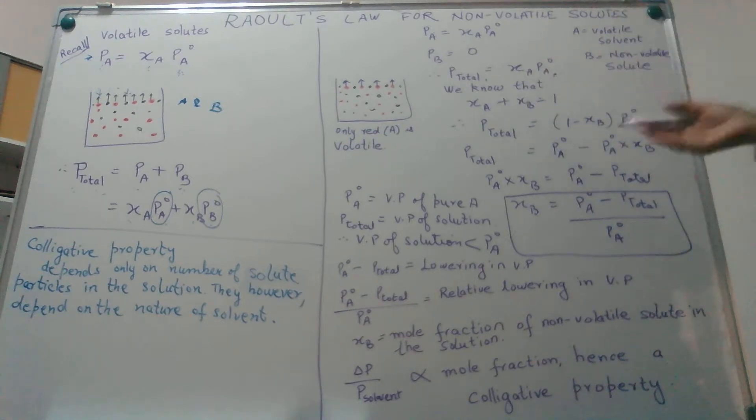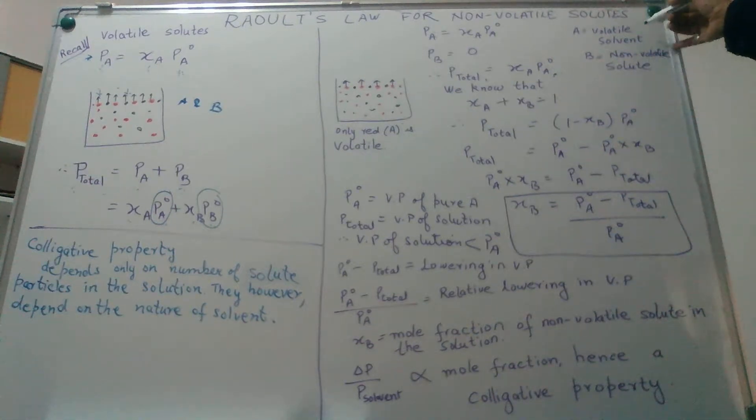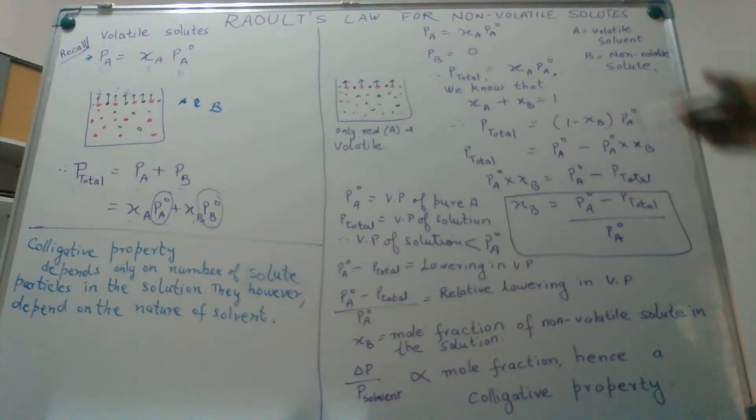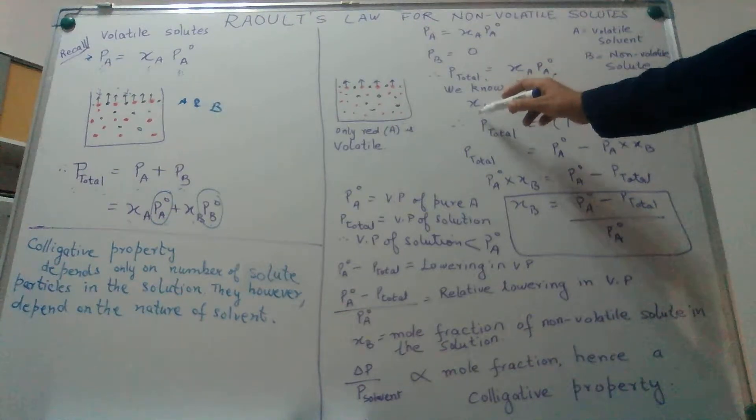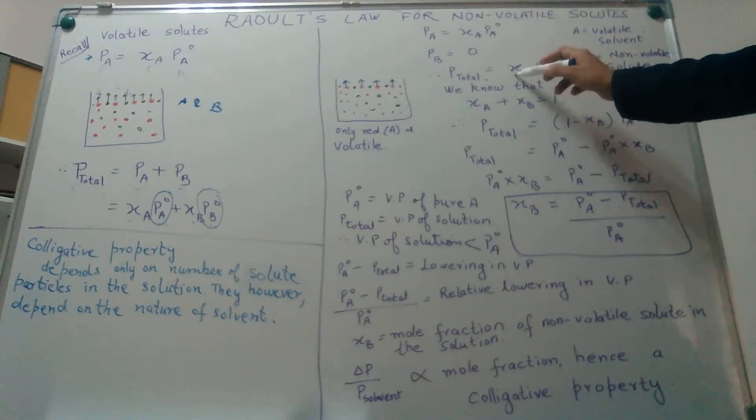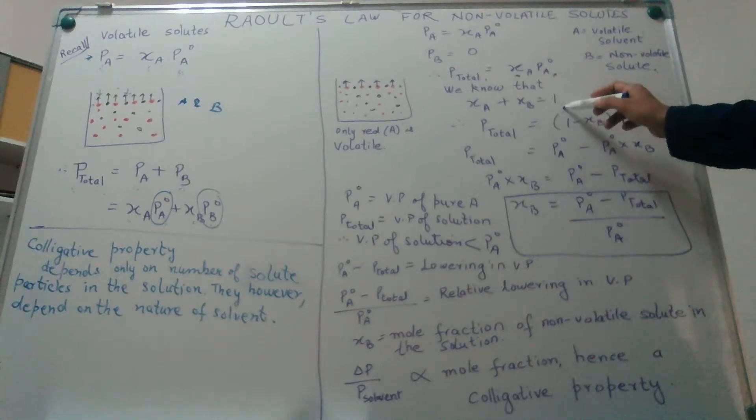Now, how do we convert this into our knowledge of solute and solvent? Because that is where you have to apply this concept. So let us say A is my volatile solvent whereas B is my non-volatile solute in this mixture. Let us suppose we have salt water - salt is my solute and water is my solvent over here. xA plus xB is 1. In other words, the sum of mole fractions in a binary mixture is 1. I can replace xA by the mole fraction of B.